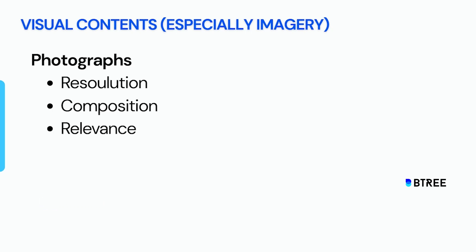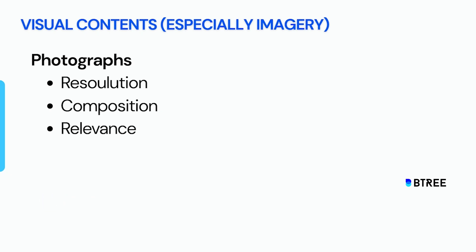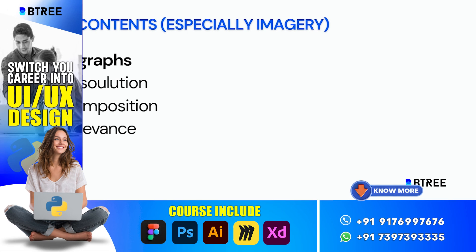If you are using a photograph, there are three important things to consider. First is resolution — that is the quality, like 4K or 3K. Resolution is important. If you are using a quality image, visually it is attractive. A low-quality image creates a feeling of irritation. So resolution is the basic thing.